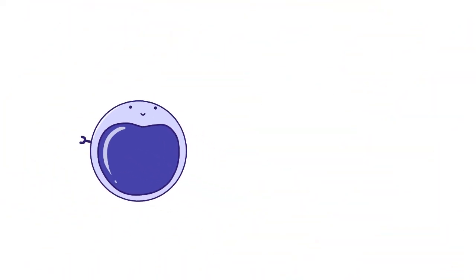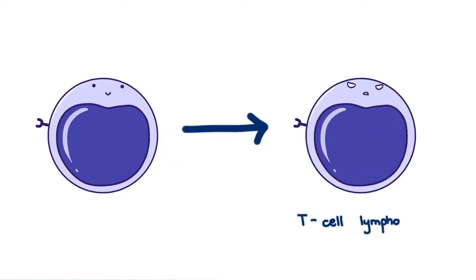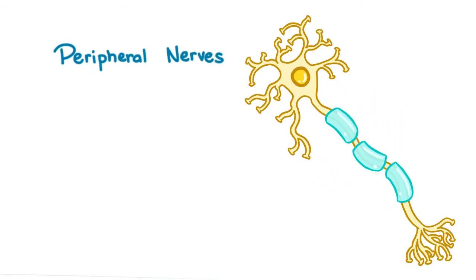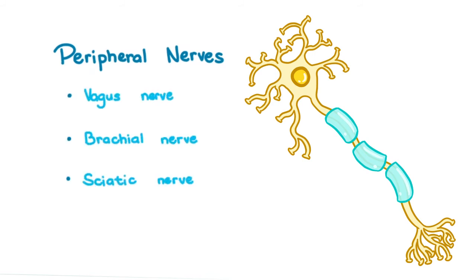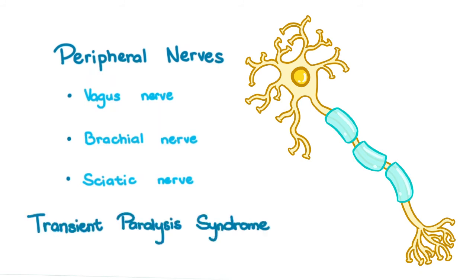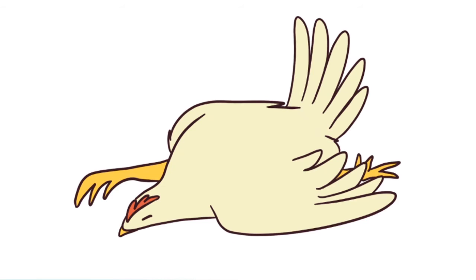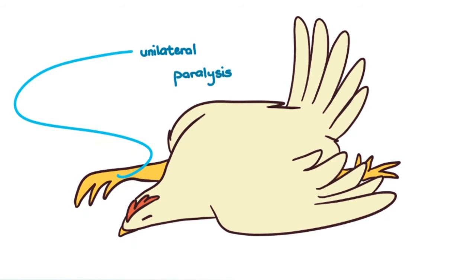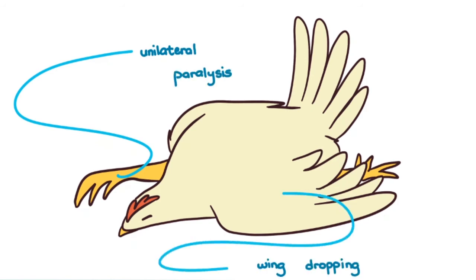Some CD4-positive T cells are transformed into T cell lymphomas. These transformed cells can then infiltrate peripheral nerve fibers, particularly the vagus, brachial, and sciatic nerves, causing what's known as transient paralysis syndrome, where chickens become ataxic for a bit and then recover. The classic picture of a chicken with one leg forward and one leg back is because of unilateral paralysis of the sciatic nerve. Wing dropping may also be evident with the brachial nerve affected. The chickens can die because they'd be unable to get to their food and water.